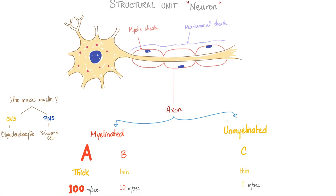These neurons have a beautiful neurolemmal sheath important in regeneration. If you sever an axon, it can actually regenerate and heal. Some neurons are myelinated, some are not, but all have this neurolemmal sheath. Who makes myelin in the CNS? Oligodendrocytes. In the peripheral nervous system? Schwann cells. Myelinated fibers include A fibers and B fibers; unmyelinated are C fibers. A fibers are thick — 100 meters per second. B fibers are thin and myelinated — only 10 m/s. C fibers are unmyelinated and thin — only 1 m/s. That's why when running from a tiger, you need A fibers — the fastest.